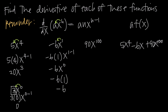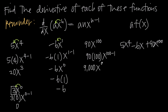In the future, when you see a constant like 3, 7, or the square root of 2, the derivative is just 0, in the same way that the derivative of negative 6x is just negative 6. For our third example, we have 90x to the 100. We bring the 100 exponent down in front: 90 times 100 is 9,000, and we subtract 1 from the exponent. So 9,000x to the 99 is the derivative of 90x¹⁰⁰.